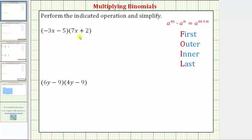To multiply two binomials, we need to distribute both terms in the first binomial into the second binomial. So to find this product, we first distribute negative three x into the second binomial — that gives us two products — and then we distribute the negative five, giving us another two products, for a total of four products. When multiplying two binomials, we always have four products.